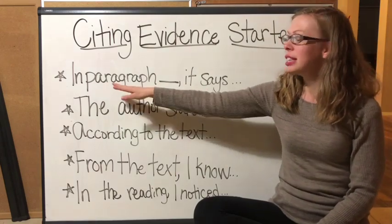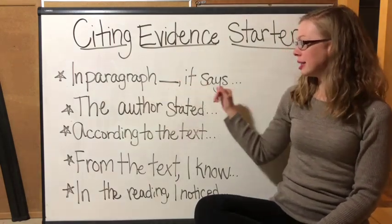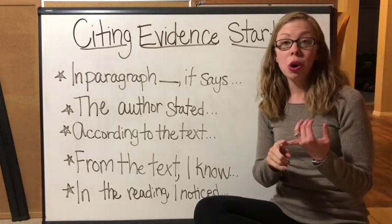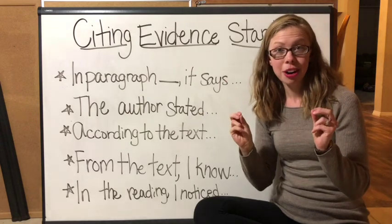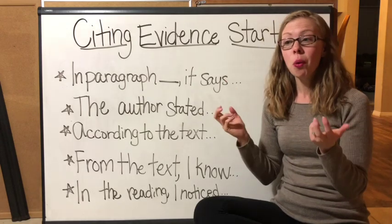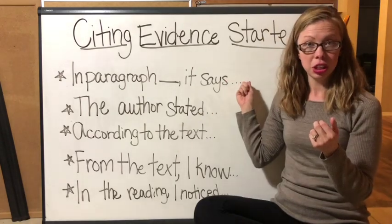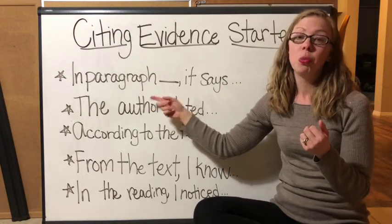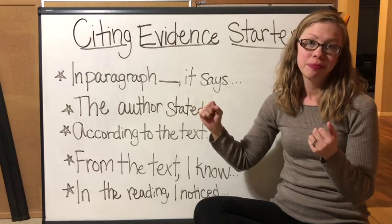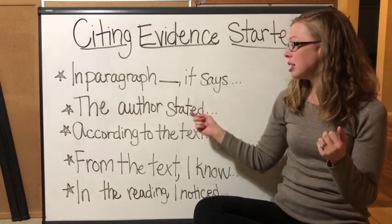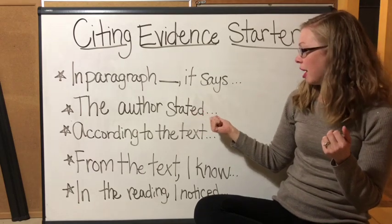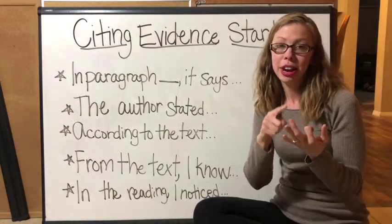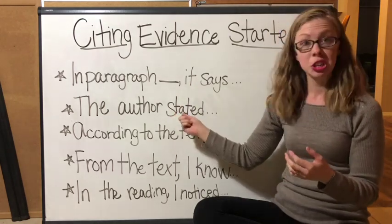In this first example, we see: "In paragraph blank, it says..." and for the remainder of the sentence you can quote exactly what the author said using quotation marks, or you could paraphrase what the author said. Because you've now cited it properly, you're giving credit to where you found that information. A few other sentence starters: "The author stated..." — where the dot-dot-dot begins is where you can add in your quote, paraphrase, or summary.